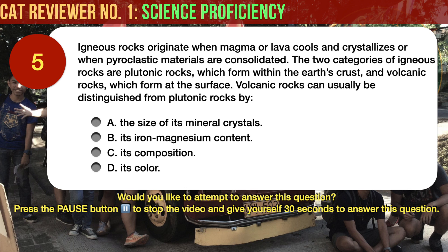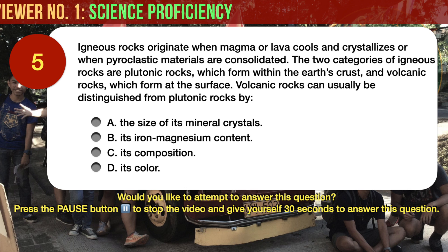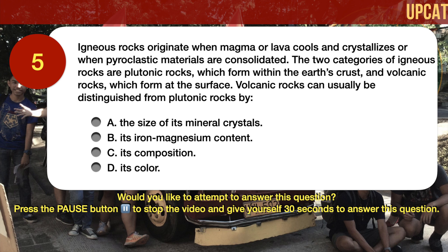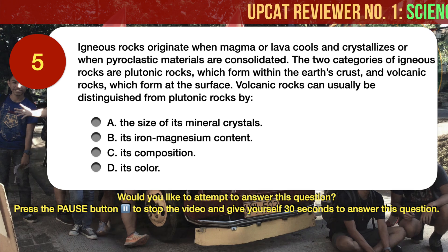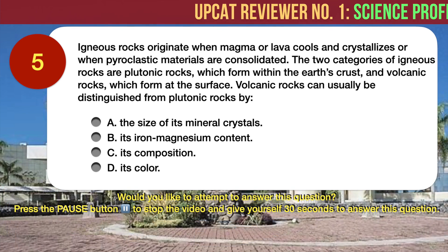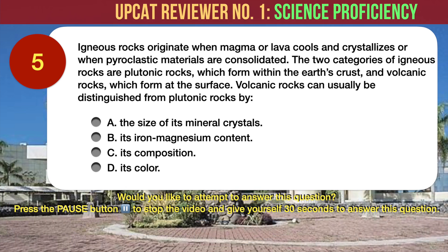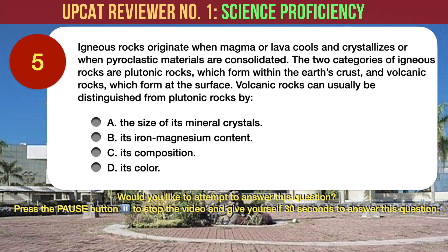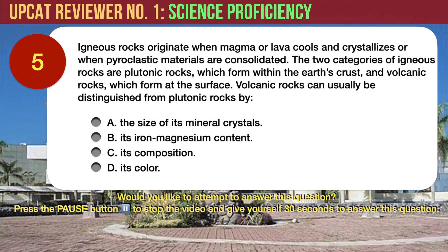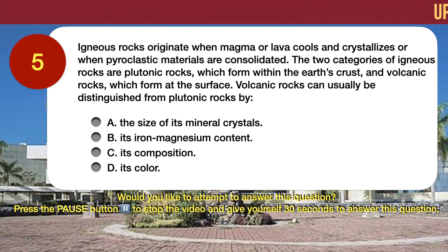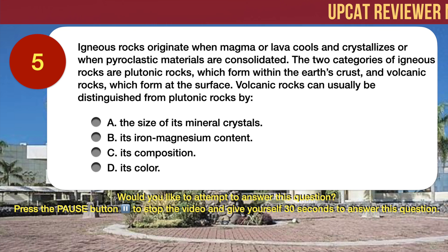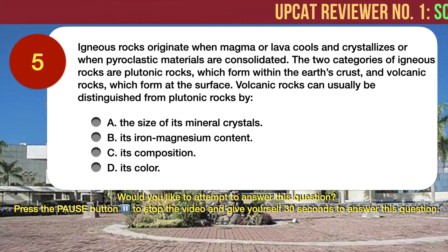Question number 5. Igneous rocks originate when magma or lava cools and crystallizes, or when pyroclastic materials are consolidated. The two categories of igneous rocks are plutonic rocks, which form within the Earth's crust, and volcanic rocks, which form at the surface. Volcanic rocks can usually be distinguished from plutonic rocks by: A. The size of its mineral crystals. B. Its iron-magnesium content. C. Its composition. D. Its color.